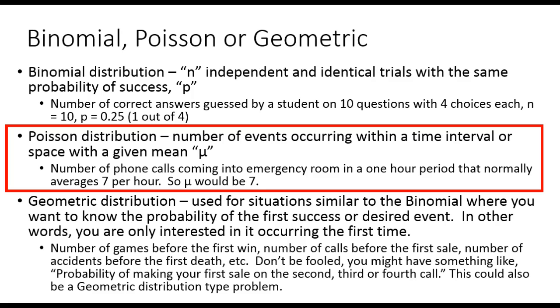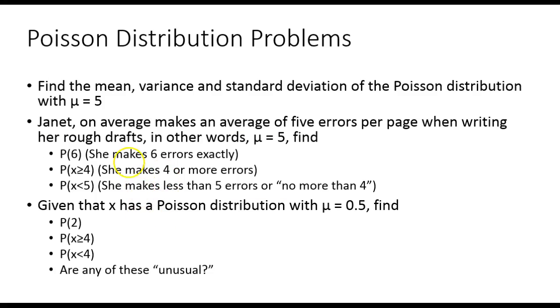The Poisson distribution - we had been looking at the binomial distribution, but the Poisson distribution is a situation where we have a number of events occurring within a time interval or space with a given mean, like the number of phone calls coming into an emergency room in a one-hour period that normally averages seven per hour. So my mean would be seven. That's the only number that I need. Let's look at some questions.